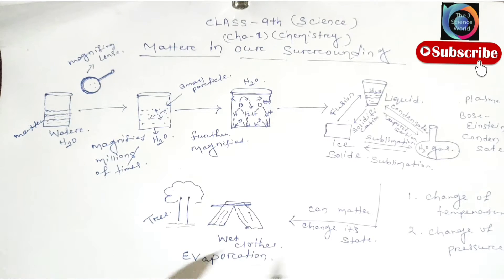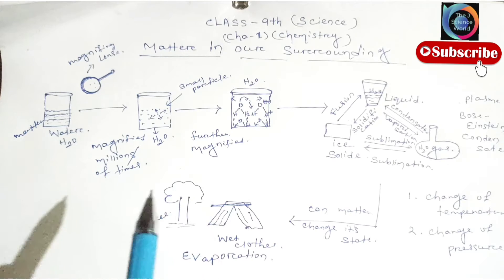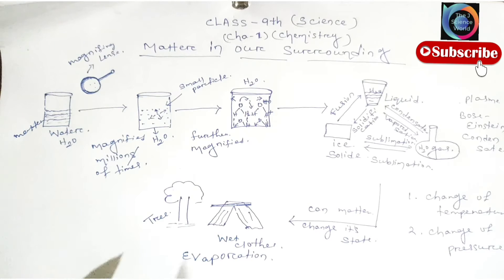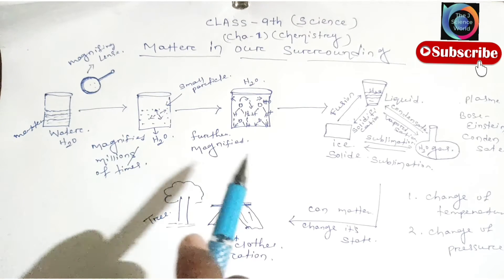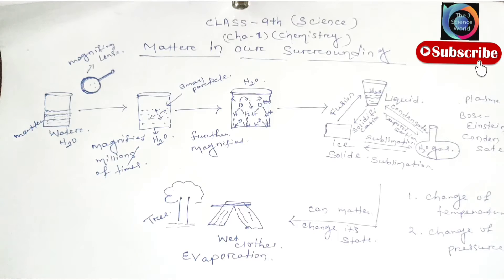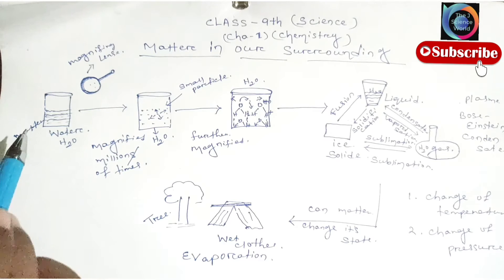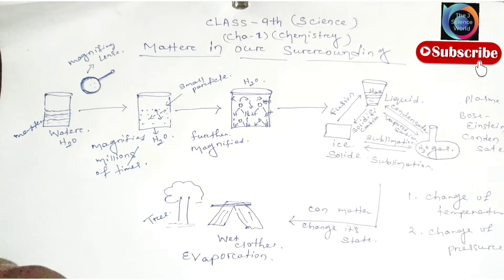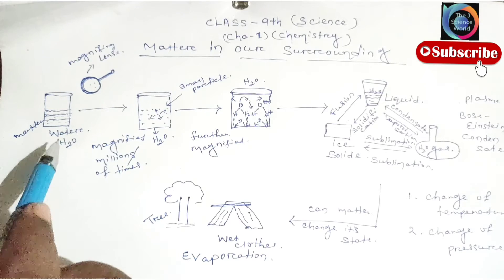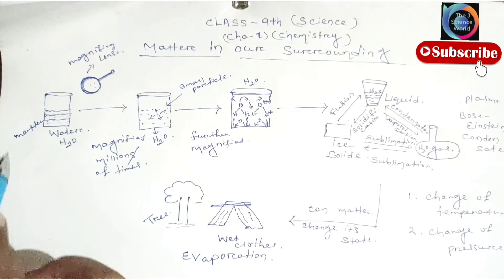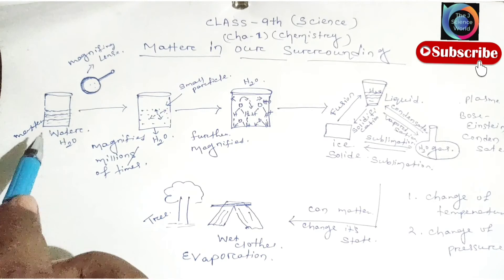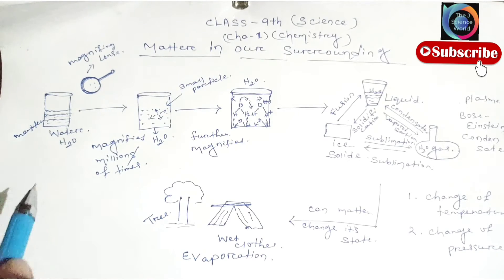Let's discuss the different terms. There are six terms related to this topic. Each structure represents one term. The first is matter — anything that has mass and occupies space is called matter. For example, in this case, we will take water as a matter.